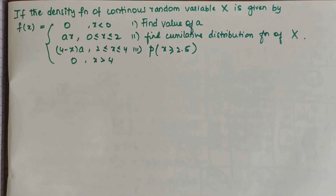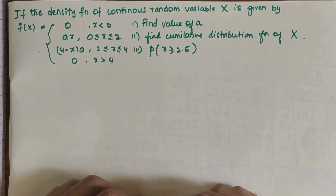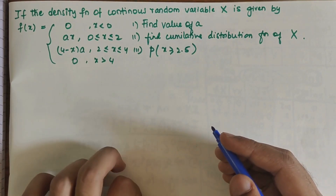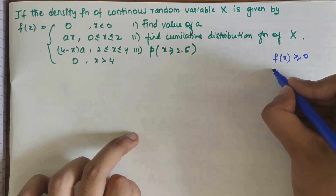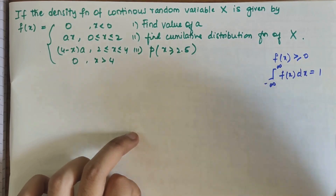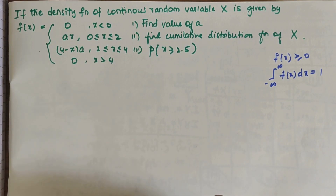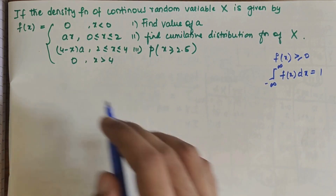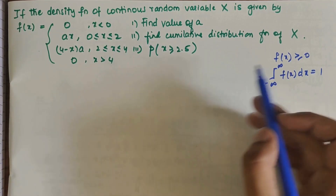We have to notice that for every X belonging to the range of a continuous random variable, we assign a real number f(x) such that f(x) should be greater than 0, and the integral of f(x)dx over the full range should equal 1. As f(x) is a probability distribution function, it has to obey these two laws.